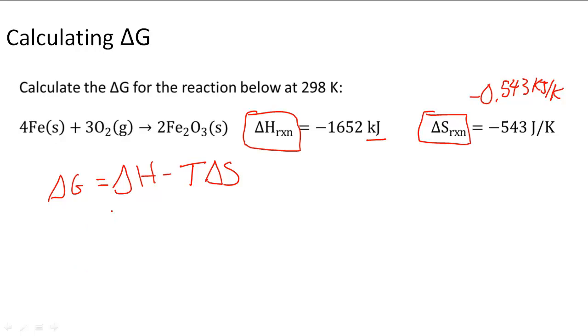So now we have that, we can do this equation. So negative 1652 kilojoules minus 298 Kelvins times the entropy, which is negative 0.543 kilojoules per Kelvin. And when I do this calculation...